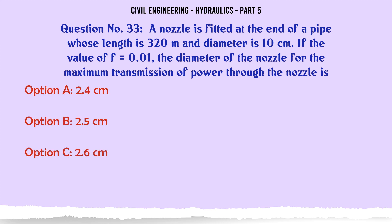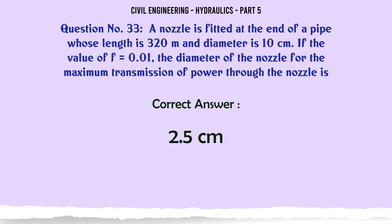A nozzle is fitted at the end of a pipe whose length is 320 m and diameter is 10 cm. If the value of f = 0.01, the diameter of the nozzle for the maximum transmission of power through the nozzle is: A. 2.4 cm, B. 2.5 cm, C. 2.6 cm, D. 2.7 cm. The correct answer is 2.5 cm.